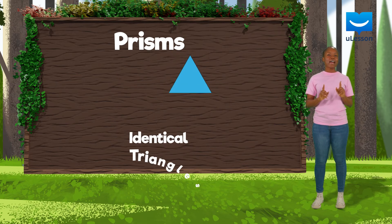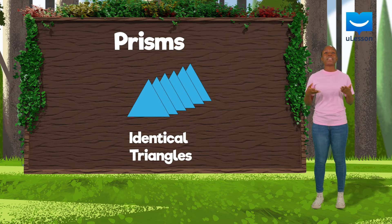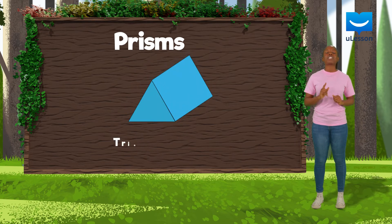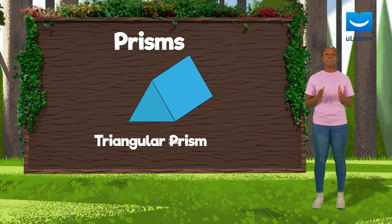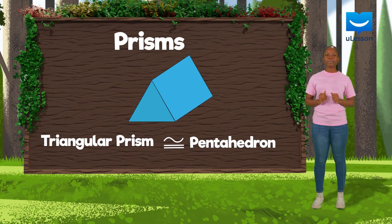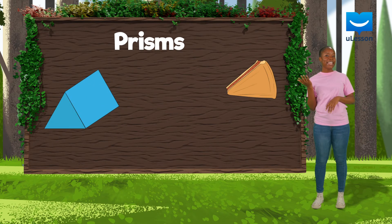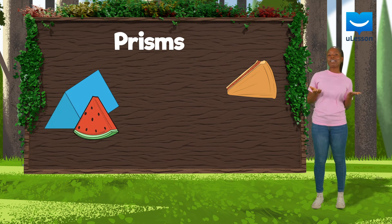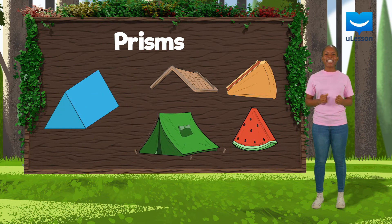What happens if we glue identical triangles together? This prism is called a triangular prism. It's a type of pentahedron. Do you know what this shape reminds me of? A slice of pie, a slice of watermelon, the roof of a house, and a camping tent!